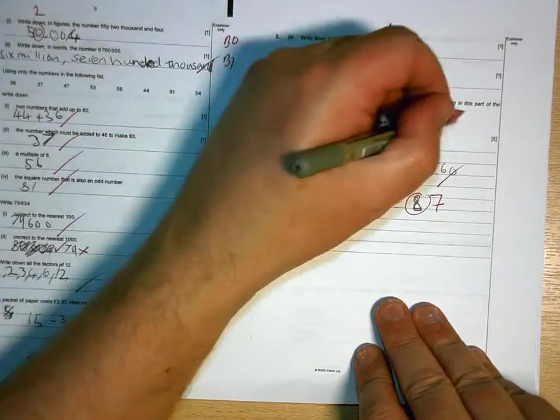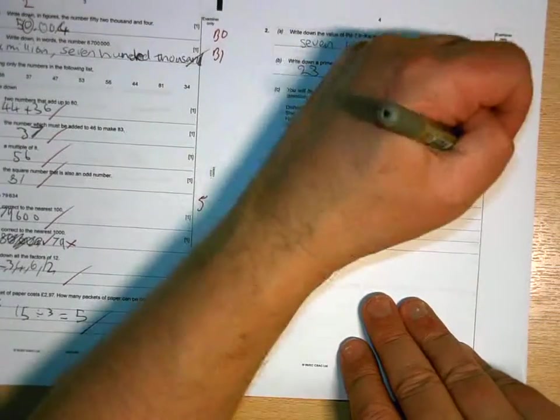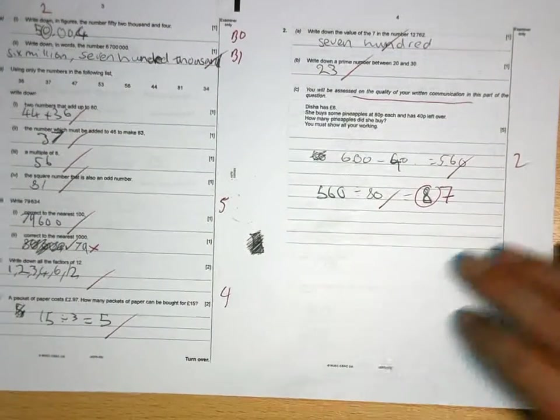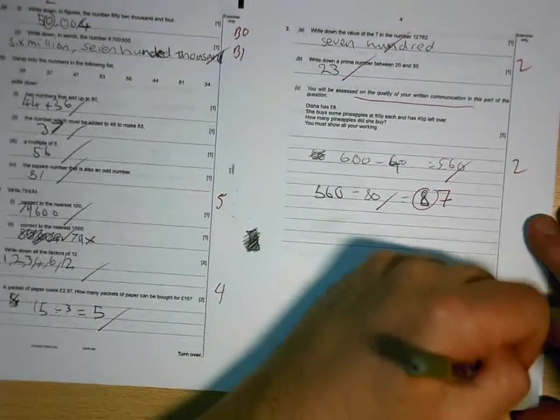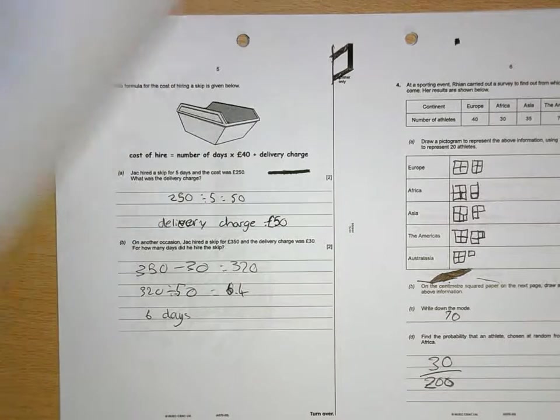There's two marks for the communication, there is no communication, so you get two out of the five there. Okay, 5, 10, 14 for that page.